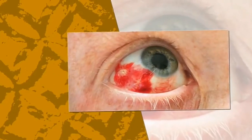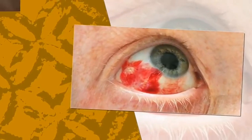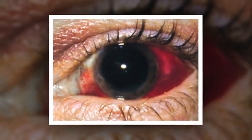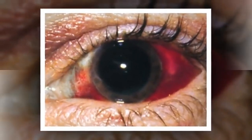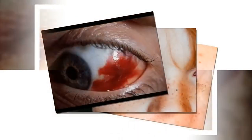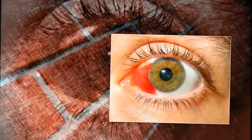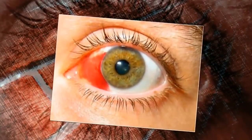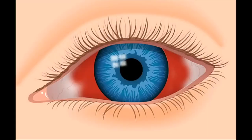Bleeding in the eye that occurs between the lens and retina takes place in the part of the eye known as the vitreous chamber. This type of eye hemorrhage happens when blood vessels near the retina tear and leak blood into the clear, gel-like atmosphere of the chamber. Vitreous hemorrhages are considered minor; however, some people seek medical help to excise the blood or blood clot from the vitreous chamber if it does not dissipate on its own.